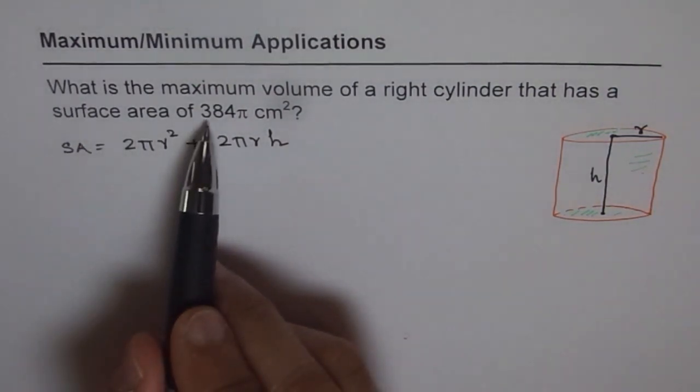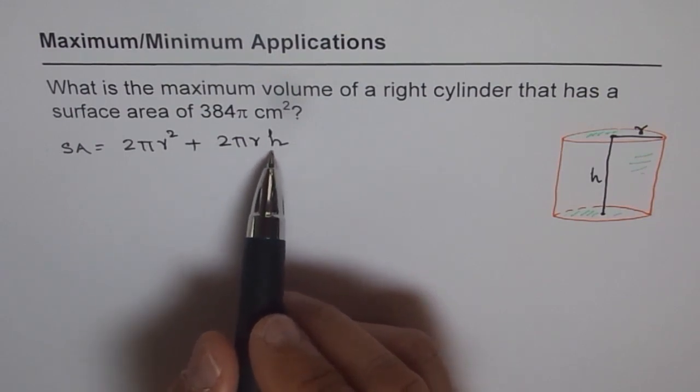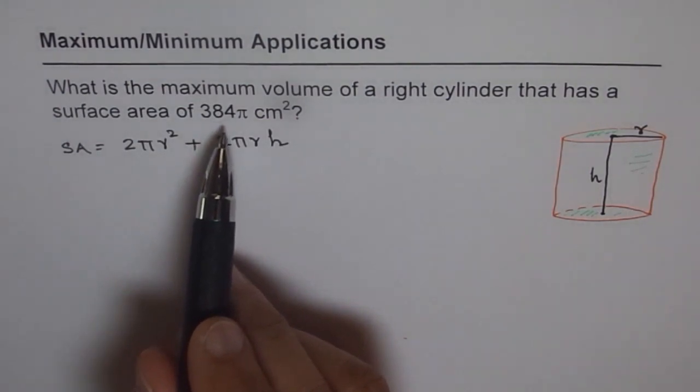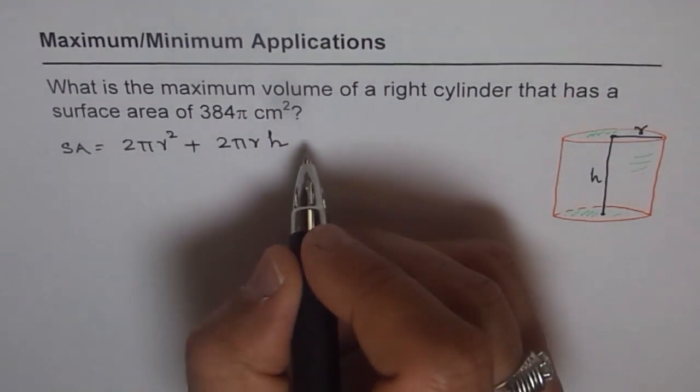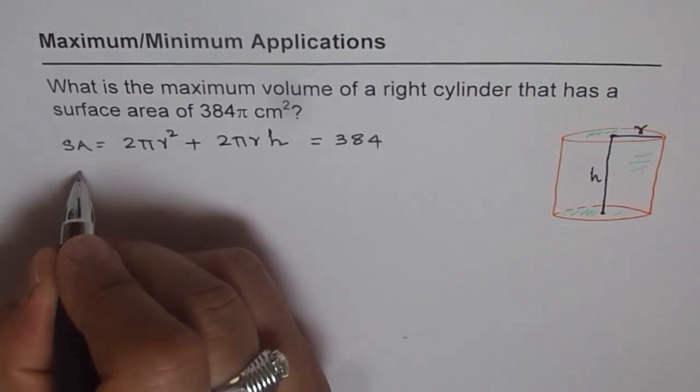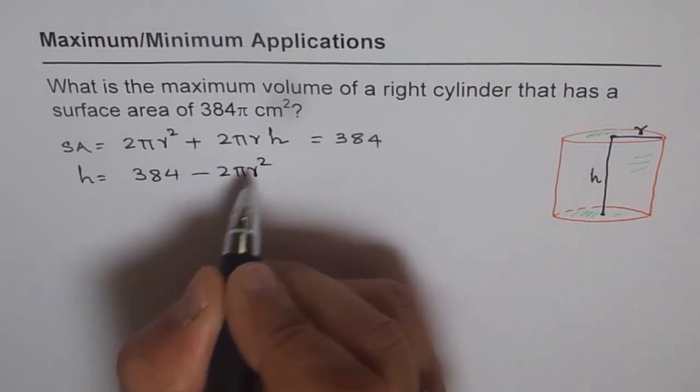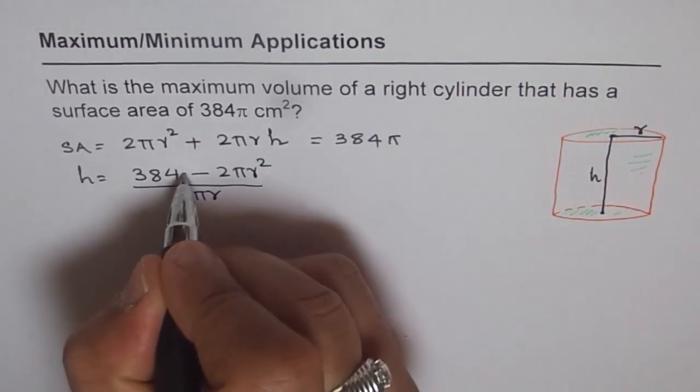Now, the surface area is given to us as 384π. This will help us relate the two variables. Whenever we are working with maximum minimum cases, we need to somehow relate the two variables. And this data, 384π as the surface area, helps us to do so. Let's write h in terms of r using 384π as the surface area. So we can say this equals 384π.